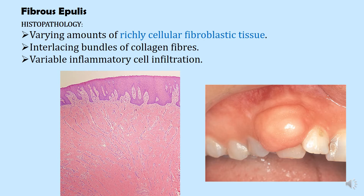The term epulis itself tells us it's on the gingiva, and fibrous indicates a lot of fibrous tissue. Histopathologically, when this lesion is excised you will see an overlying parakeratinized epithelium — which is the normal epithelium of the gingiva — varying amounts of richly cellular fibroblastic tissue, interlacing bundles of collagen fibers, and variable inflammatory cells. In this histological slide, the pale pink structures between the cells are the collagen fibers.